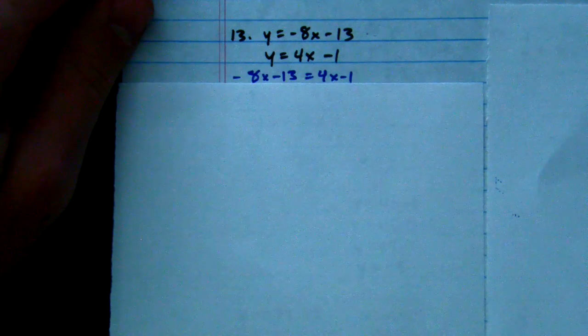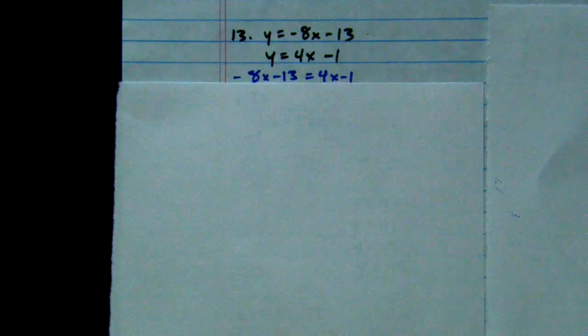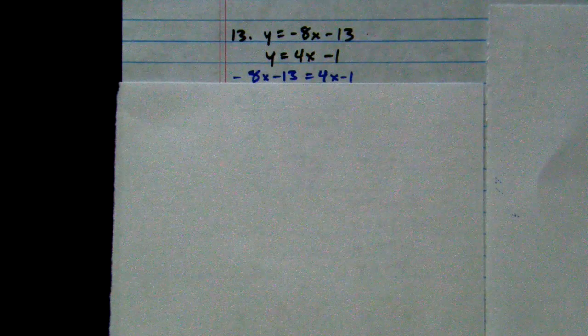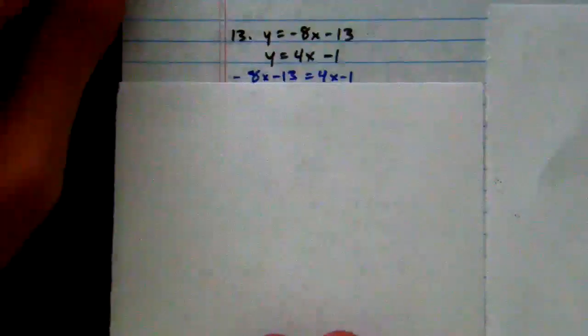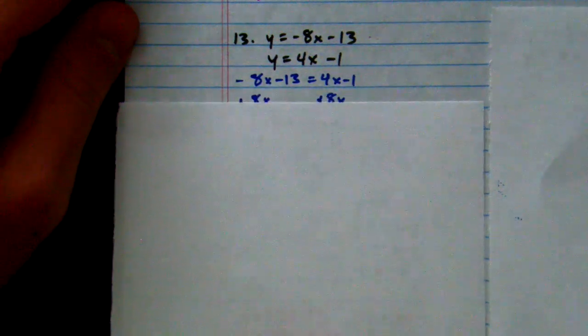So because they're both already solved for y, we can set mx plus b equal to mx plus b, just like that. And again, you can have it flipped around. You could have 4x minus 1 equal negative 8x minus 13. It doesn't matter. But we set our mx plus b equal to mx plus b.